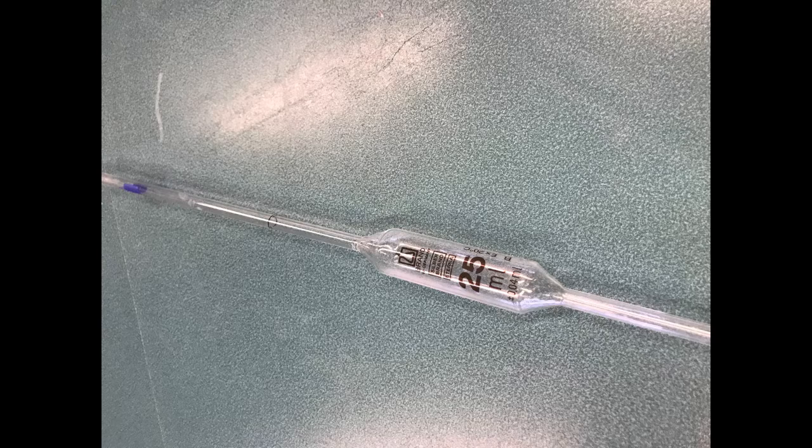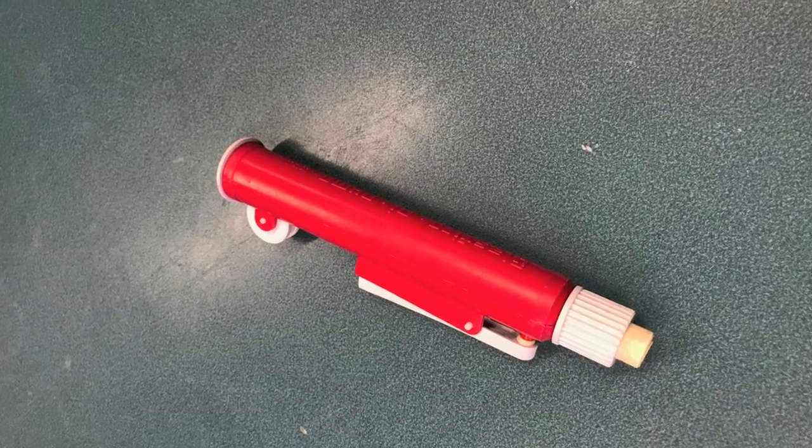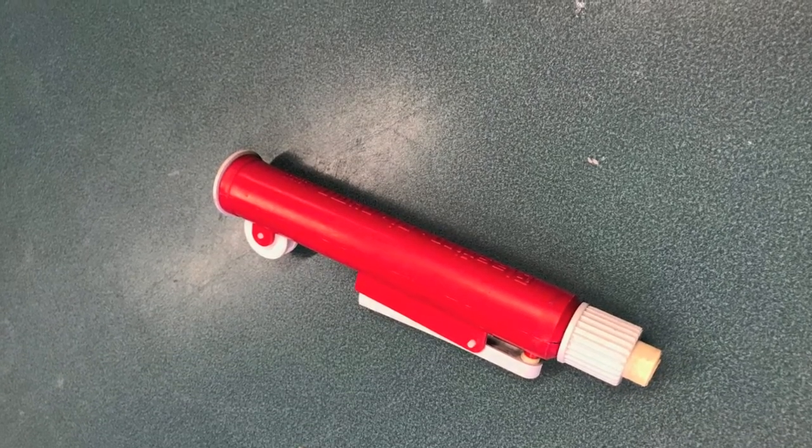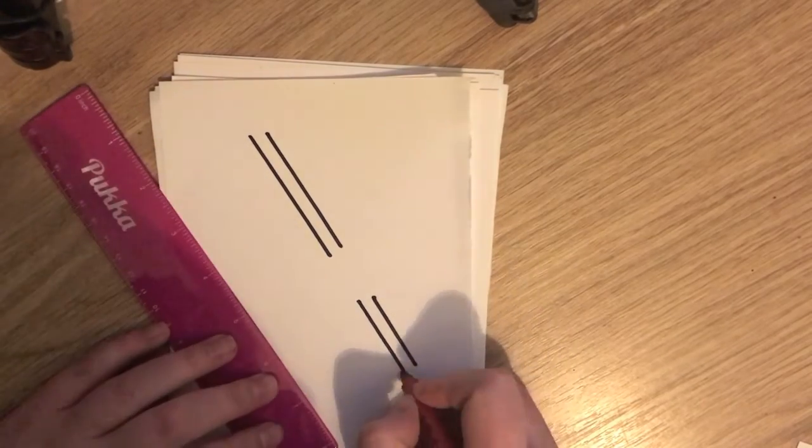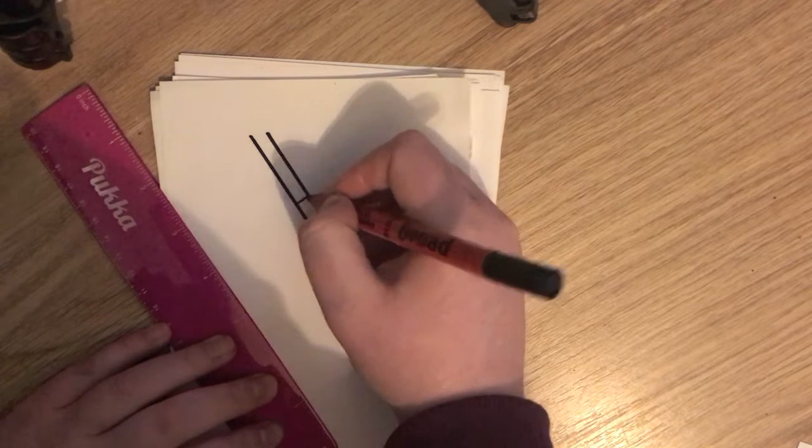Pipettes are used during titration reactions to measure out accurately known volumes of liquids. They are filled using a safety filler up to the line which can be seen on the pipette. They come in many different volumes, although 10, 20, and 25 are very common.